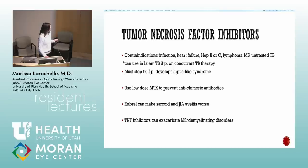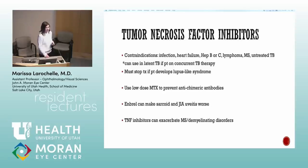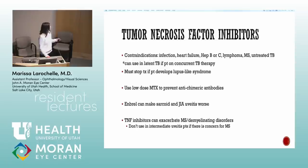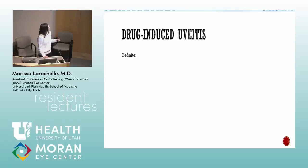Enbrel can worsen sarcoid and JIA uveitis. Important clinical pearl: TNF inhibitors can worsen multiple sclerosis. Since intermediate uveitis is associated with MS, if you're considering starting an intermediate uveitis patient on a TNF inhibitor after methotrexate failure, get an MRI and take a thorough neurologic history first.